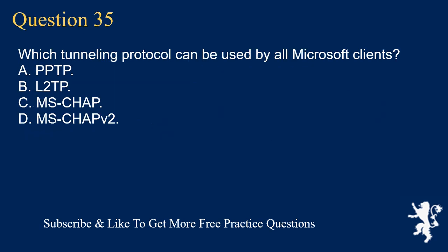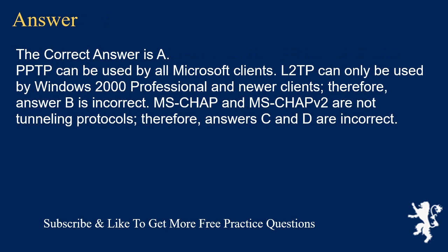Question 35. Which tunneling protocol can be used by all Microsoft clients? A. PPTP. B. L2TP. C. MSCHAP. D. MSCHAP 2. The correct answer is A. PPTP can be used by all Microsoft clients. L2TP can only be used by Windows 2000 Professional and newer clients. Therefore, answer B is incorrect. MSCHAP and MSCHAP 2 are not tunneling protocols. Therefore, answers C and D are incorrect.